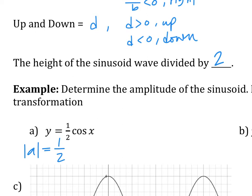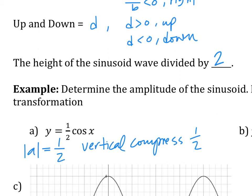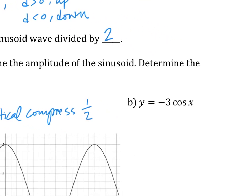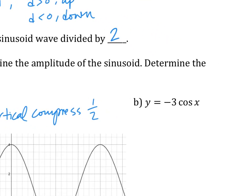What is the transformation? The one half creates a vertical compress. So this is going to be a vertical compress by one half. Now let's have you try B, and then we'll do C together. For B, the amplitude — what is the transformation? Let's start with Ashley for the amplitude, then Mark for one transformation, and Blake for the other.